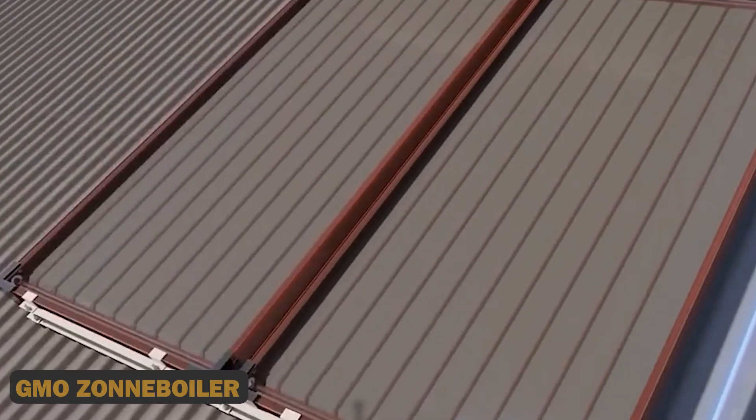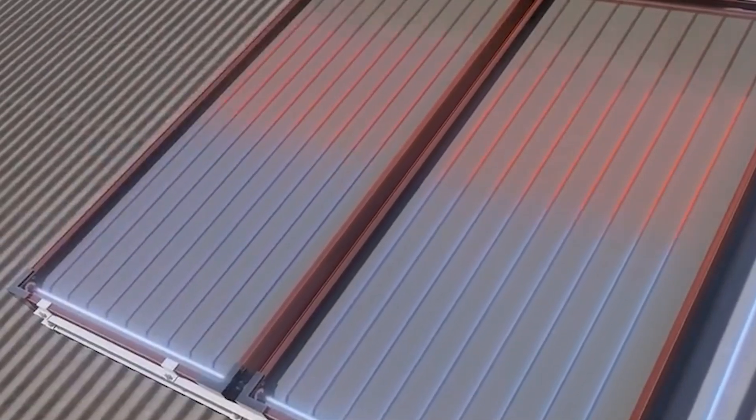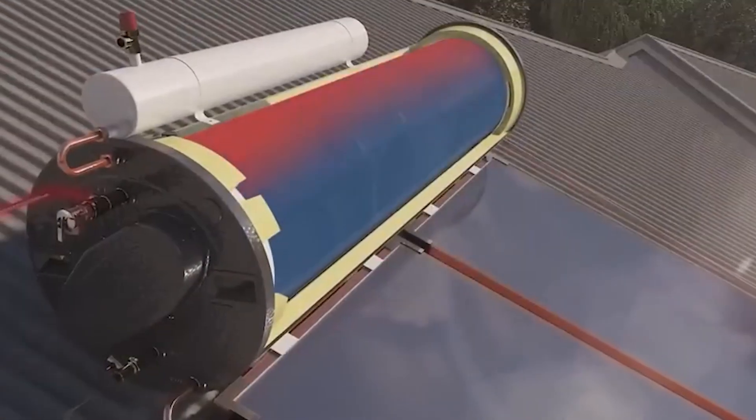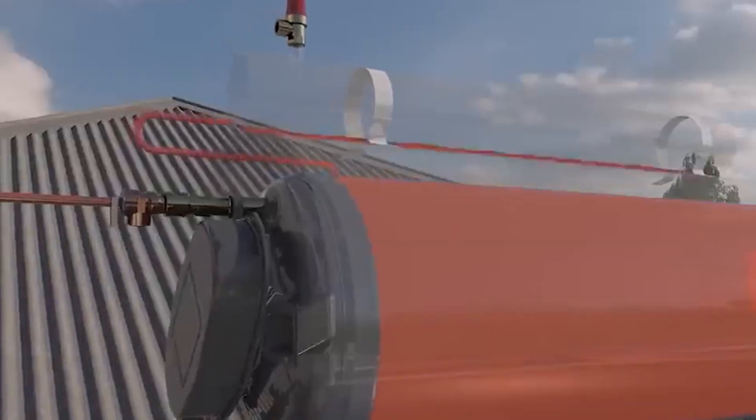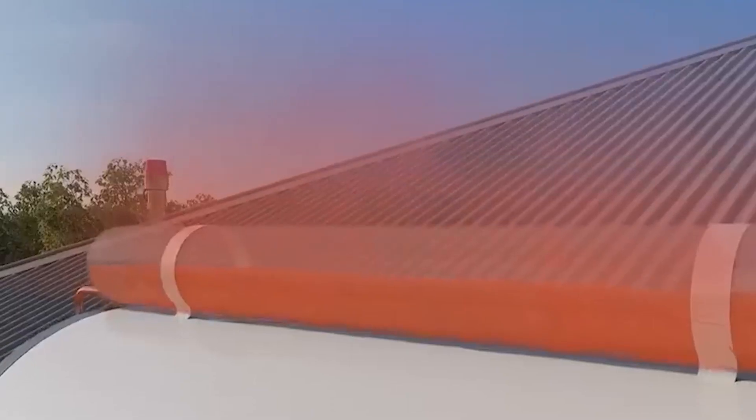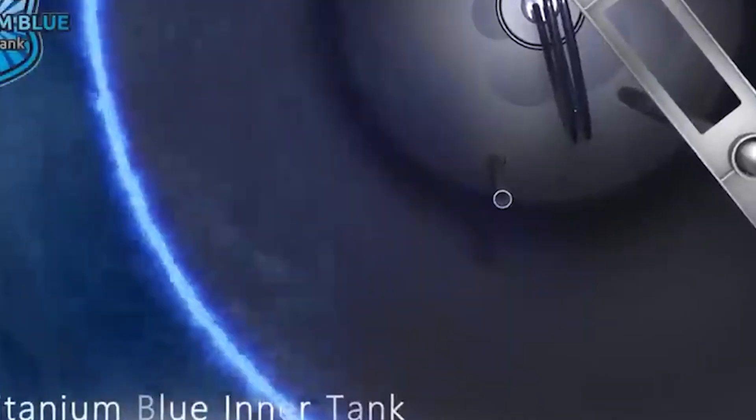Number 3: GMO Zona Boiler. Unlike traditional water heaters, the GMO Zona Boiler utilizes vacuum tubes to absorb solar energy, converting it into thermal energy with remarkable precision.